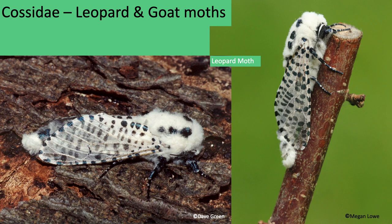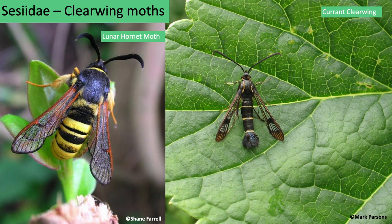Leopard and goat moths — there are three species in the British Isles, but only one found in Yorkshire, which is the leopard moth. It has six large spots on a big furry thorax and heavy spotting on whitish wings, along with males having comb-like antennae.